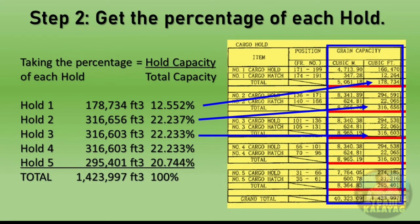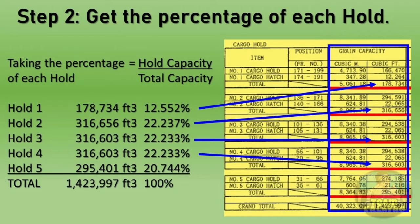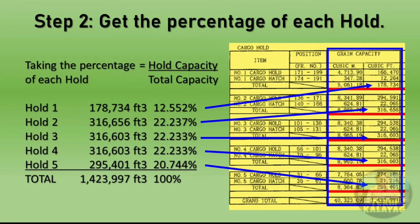In hold number 3, using the same procedure, we get 22.233 percent. In hold number 4, the same procedure gives 22.233 percent. In hold number 5, using the same procedure, we get 20.744 percent. If we check, the sum of all holds gives 100 percent.